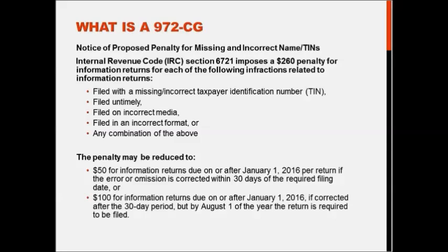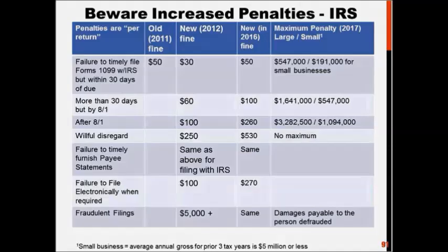The reasons a penalty can be assessed include: missing or incorrect TIN, filed untimely, using incorrect media, incorrect format, or any combination thereof. The penalty can be reduced to $50 if you fix the problem within 30 days of the due date, or $100 if you fix it by August 1st. The penalty chart is on slide 91 — I have the 2016 figures, though the failure to file electronically when required went to $270 in 2017. The caps on penalties in the right-hand box move with a CPI indexer.